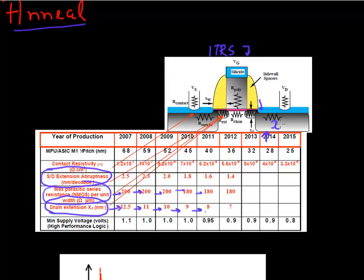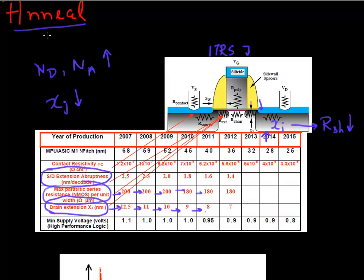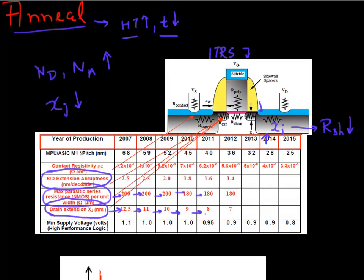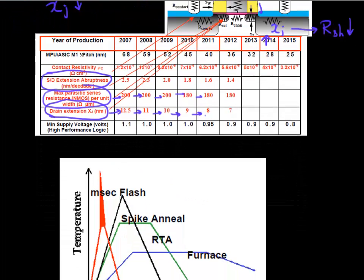These are opposing requirements: you want a region with very shallow depth but also lower resistivity. The only way to achieve this is to have higher and higher doping concentration while keeping the junction depth very shallow. This requires anneals to be done at much higher temperatures and for much shorter times, which defines the anneal landscape in semiconductor processing.